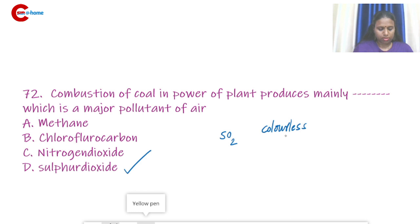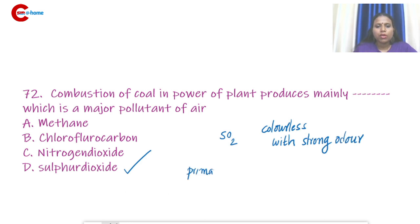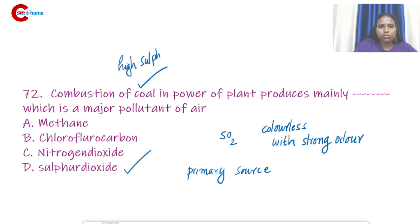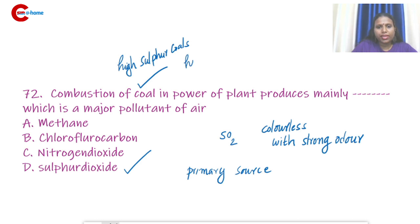Sulfur dioxide is a colorless gas with a strong odor. The primary source of sulfur dioxide is the combustion of coal, especially high-sulfur coal. It is also emitted from heating oils.